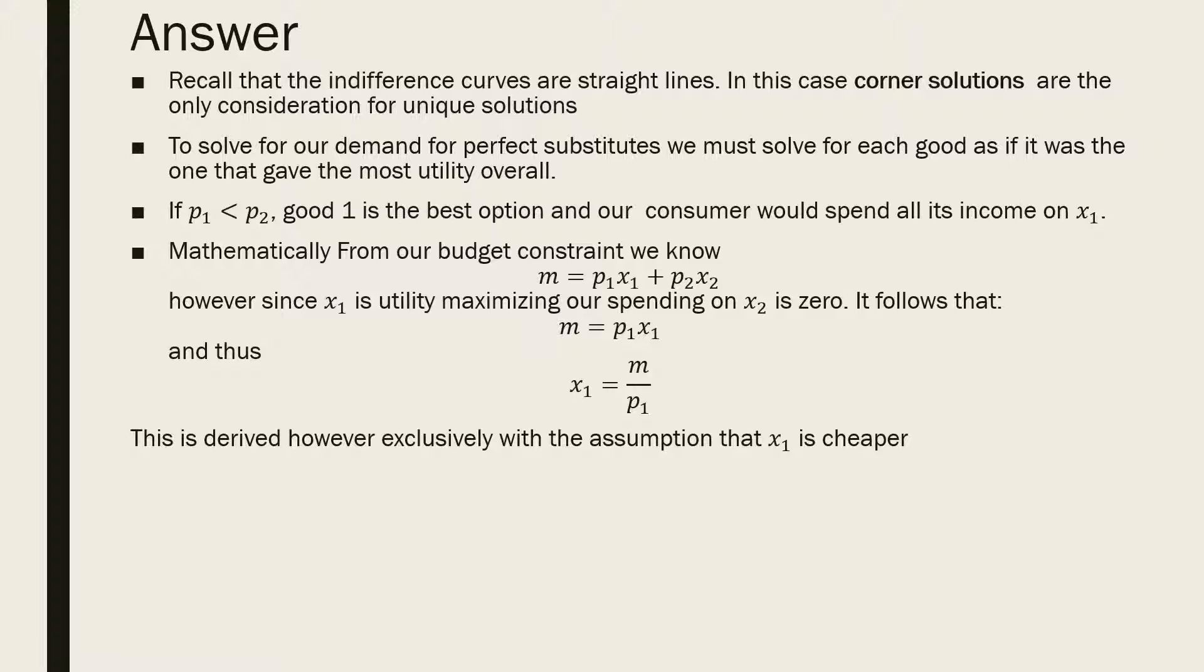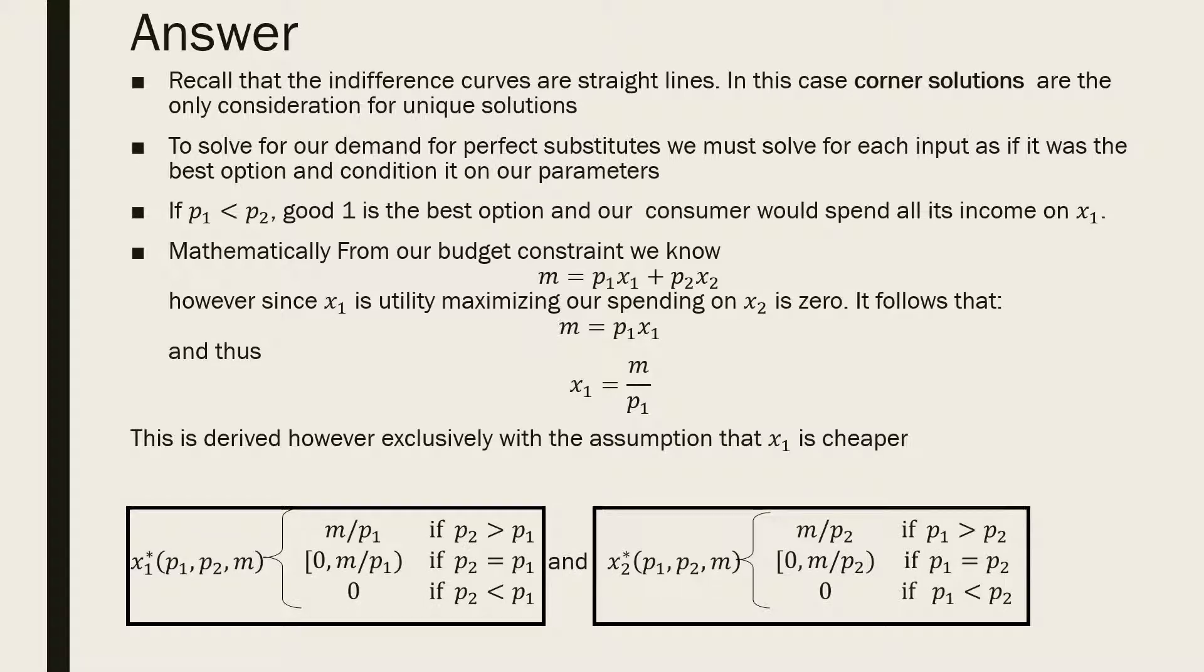More generally, we can write our Marshallian demands for these two goods in a piecewise manner, where if p1 is less than p2, our Marshallian demand for good one would be m over p1.